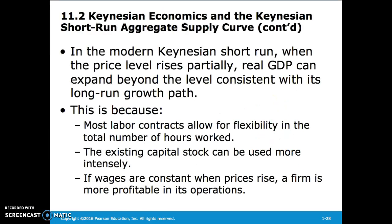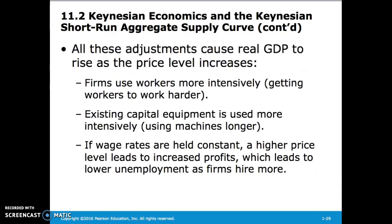In the modern model, the price level rises partially, so real GDP can expand beyond the level consistent with its long-run growth path. This occurs because most labor contracts allow for flexibility in total work hours, the existing capital stock can be used more intensely, and wages are constant when prices rise, making a firm more profitable. These adjustments cause real GDP to rise with the price level.